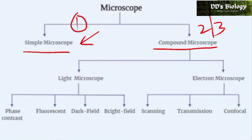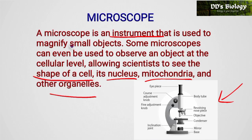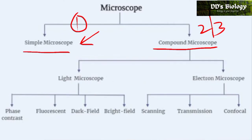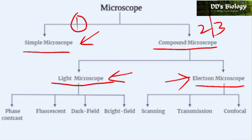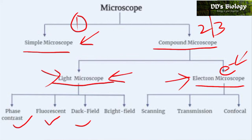The microscope is also classified as a light microscope, where visible light illuminates the specimen, and an electron microscope, where there is no visible light — electron beams are used instead. The light microscope is further divided into phase contrast, fluorescent, dark field, and bright field microscopes.